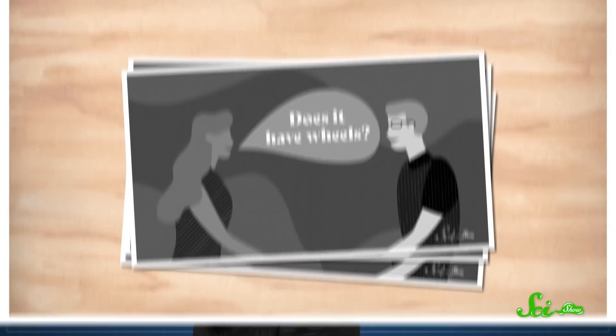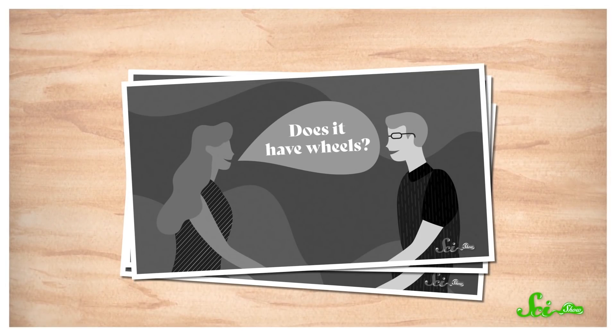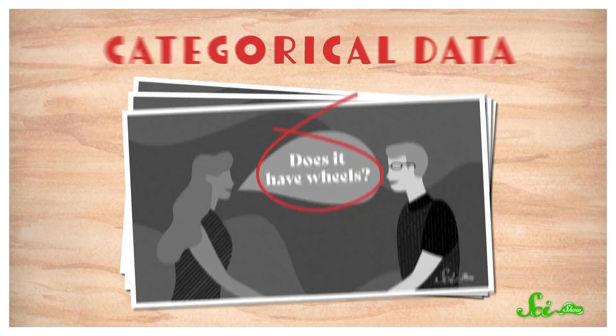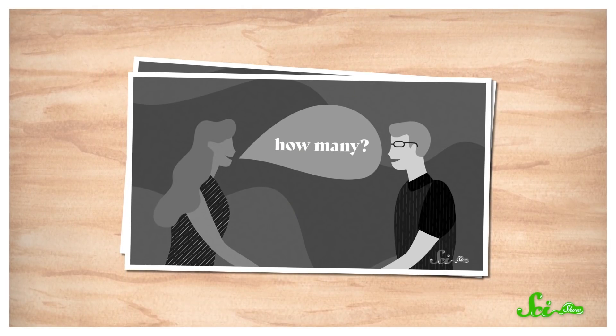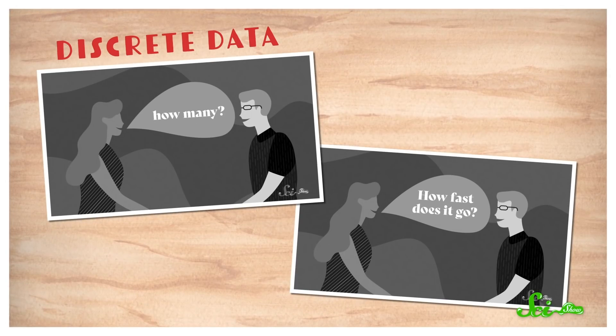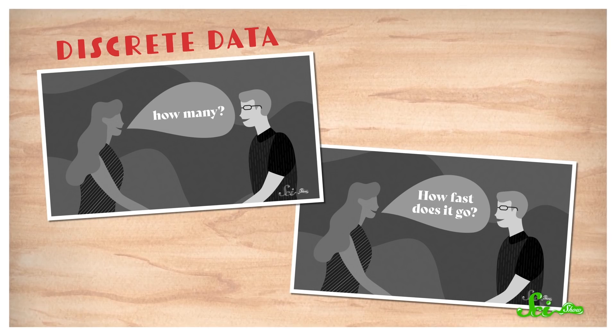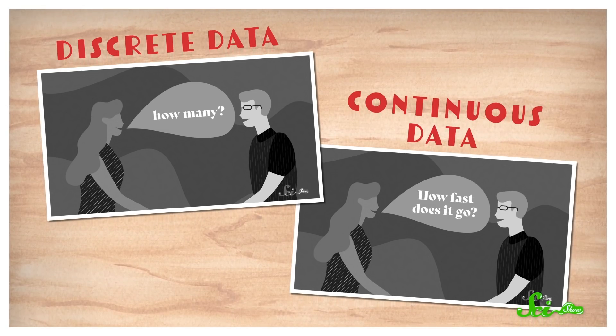Decision trees work the same way. What makes them so flexible is the wide variety of data they can handle. Your three questions, for example, included three kinds of data. Does it have wheels? Was checking categorical data, not something represented by a number. Vehicles can only have a whole number of wheels, so that question was asking about discrete data. While top speed can be any number and is therefore continuous data.